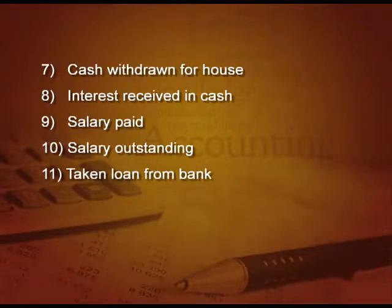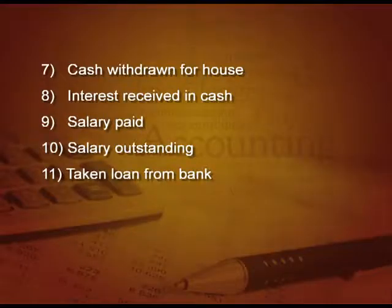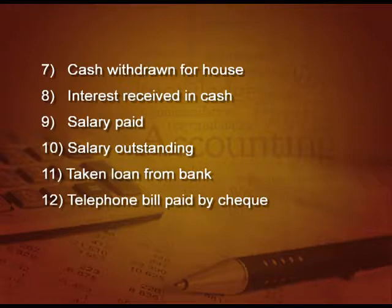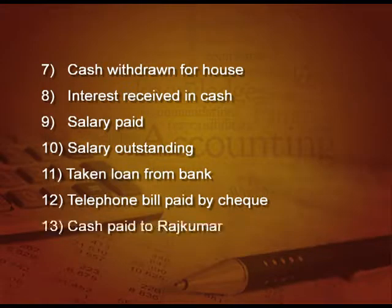Next: taken loan from bank. What is coming in? Bank account is coming in, and what is the liability? Loan. So entry will be: bank account debit, To bank loan. Next: telephone bill — it is an expense, so expense will be debited. Telephone expenses debit and we are paying by cheque, so bank will be credit. Entry: telephone expenses debit, To bank account. Next: cash paid to Rajkumar. Rajkumar is the receiver, so Rajkumar account debit, To cash, because cash is going out.